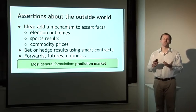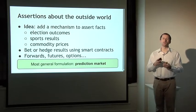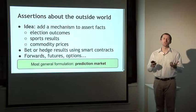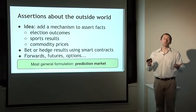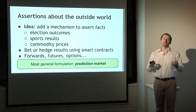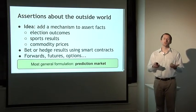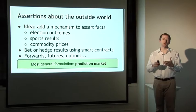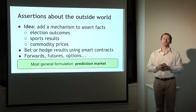You could bet on the future price of commodities or on who's going to win a sports match, you could hedge, and you could derive all of the things like forwards and futures that financial markets are built to buy and sell and trade. Wouldn't it be great if we could do all of this within Bitcoin — basically every variety of betting on the future? The most general formulation of this is called a prediction market, and if you can build a prediction market you can essentially build almost any other financial derivative that you'd be interested in.